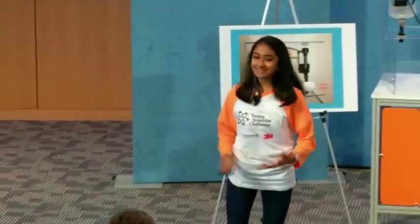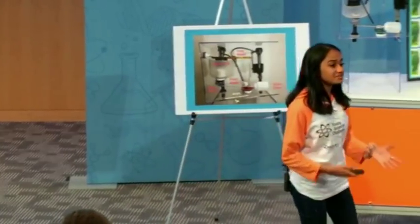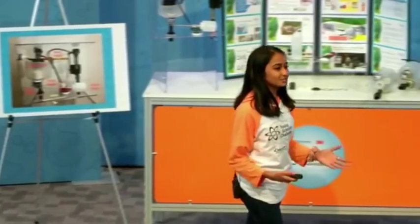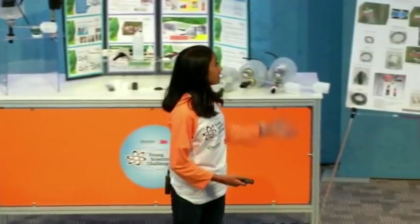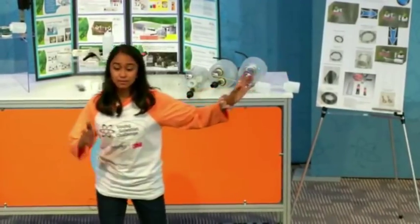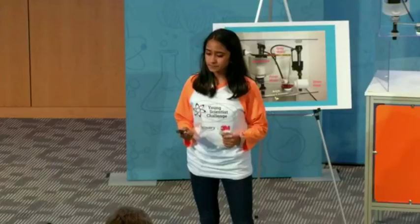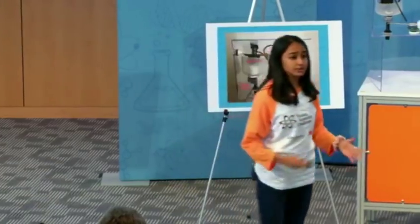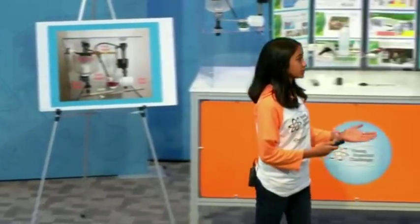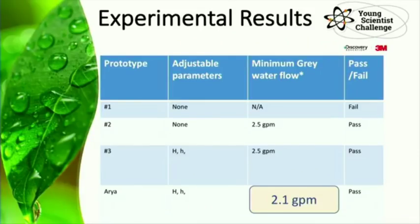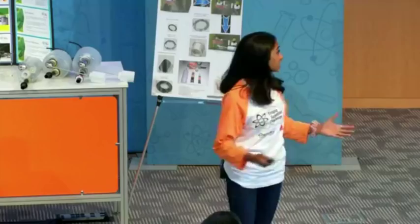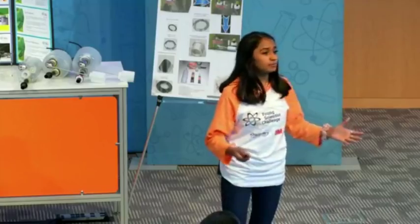This plot was created to find the minimum gray water flow required for 100% fresh water savings. The gray water flow rate that keeps the minimum point above 1.5 inches is the minimum gray water flow rate. This 1.5 inches is half the height of the small tank. I tested all my prototypes for the minimum gray water flow required, and the minimum gray water flow required for Aria is 2.1 gallons per minute, which can be easily achieved from an overhead tank.